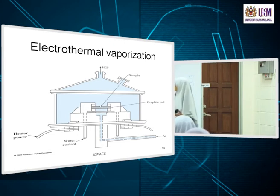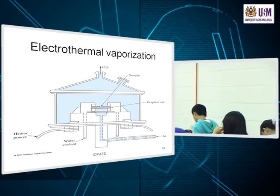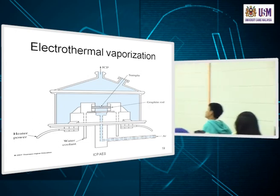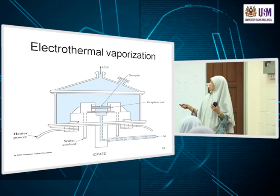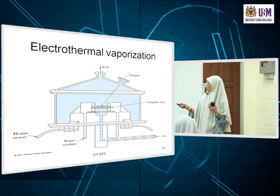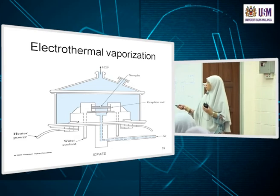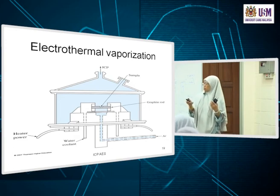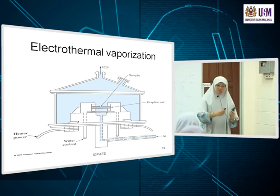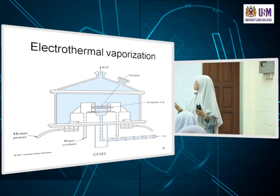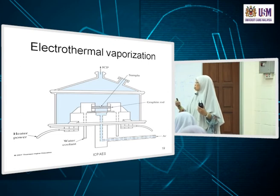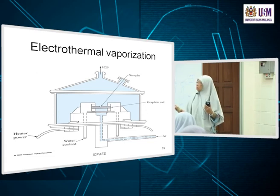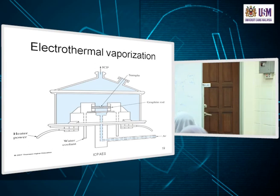Another sample introduction method is electrothermal vaporization (ETV) coupled with ICP. Similar to graphite furnace AAS, the sample on a graphite rod is heated electrically. The argon flow carries the produced vapor into the ICP plasma. Here the ETV is used only to vaporize the sample and introduce it to the plasma — not to excite or ionize it.